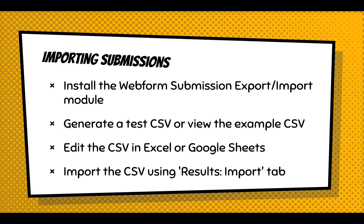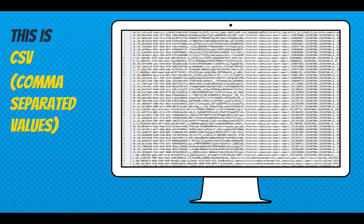You need to enable the module — it's called the Submission Export Import module, and it's included. Once you have it installed, you can generate a test CSV in a specific format. It's a very clean CSV versus other export formats. You can do CSV export, but there are more control and fine-grained options. This is a simple CSV and I'll show it to you, or you can view an example. Then you can edit that CSV in Excel or Google Sheets or generate it from another system, and import it using the results import tab. A CSV is a simple text file with comma-separated values.